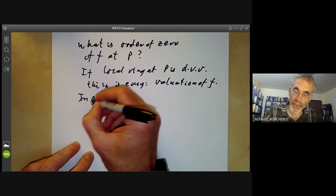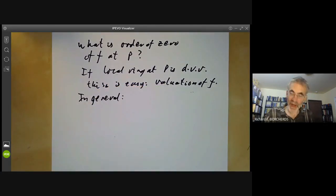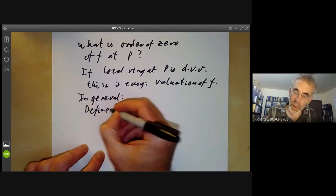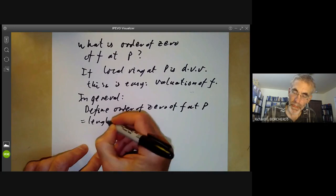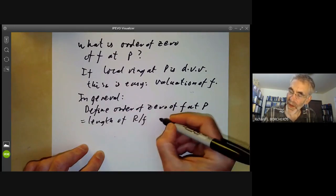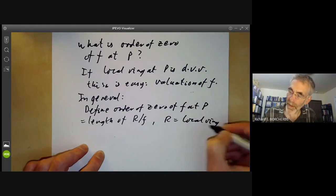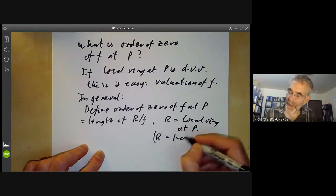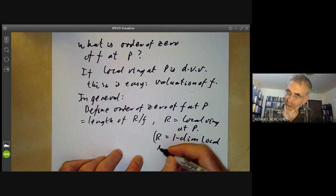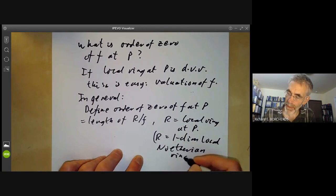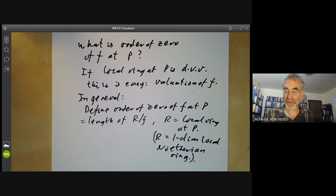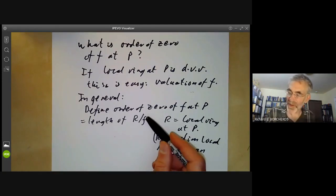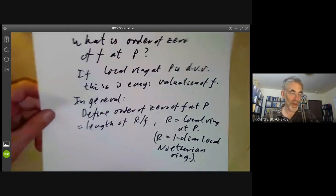In general, you have to be more careful. We can define the order of zero of F at P to be the length of R over F, where R is the local ring at P. So R is a one-dimensional local Noetherian ring. There's no problem doing this because F is a non-zero divisor, since we've assumed the scheme is integral.